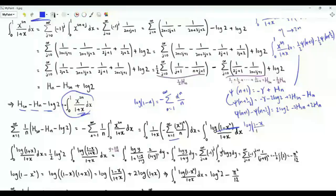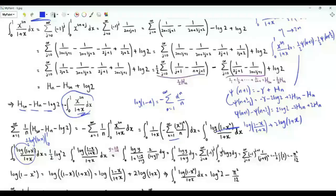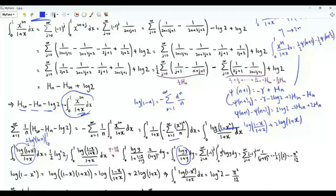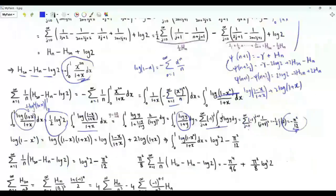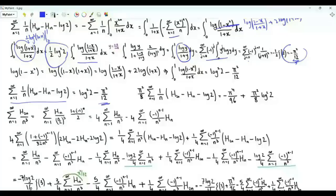We write log(1−x²) = log(1−x)(1+x) = log(1−x) + log(1+x), or alternatively log(1−x²) = log((1−x)/(1+x)) + 2log(1+x). The antiderivative of log(1+x)/(1+x) is (1/2)log²(1+x); using the limits gives (1/2)log²2. For the integral of log((1−x)/(1+x))/(1+x), substitute y=(1−x)/(1+x); the integrand becomes log(y)/(1+y). Expanding 1/(1+y) = Σ(−1)^g y^g and integrating term by term then summing gives −π²/12. Hence Σ_{n≥1}(1/n)(H(2n)−H(n)−log2) = log²2 − π²/12, and multiplied by π²/8 this contributes (π²log²2)/8 − π⁴/96.